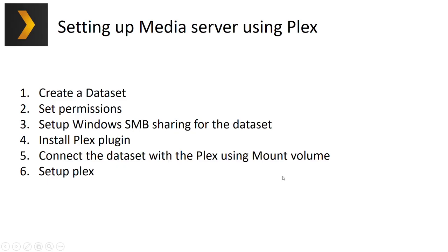Here are the basic steps to set up the media service with Plex: first, create a dataset; then set the permissions for the dataset; then set up Windows SMB sharing for the dataset so you can put your media files, movies, and TV shows into it. Then install the Plex plugin and connect it to the dataset so Plex can access your files through its file system and render those videos to you.